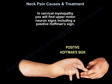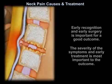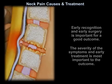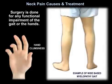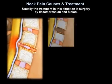This is how you will see a positive Hoffman sign. Other upper motor neuron signs include hyperreflexia, a positive Babinski test, and the clonus test. Early recognition and early surgery is important for a good outcome. The severity of symptoms and early treatment is most important to the outcome. Surgery is done for any functional impairment of the gait or the hands, and the treatment in this situation is decompression and fusion.